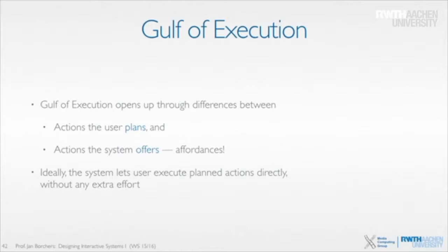The gulf of execution opens up because there might be differences between the actions I plan and the actions that the system offers. We're back to affordances — I might say I know I want to do this, but I don't know how to do it here because I'm not seeing the operations in the interface. An ideal system lets me execute my planned actions directly without having to think about it — I just see exactly how things work and it matches my plan precisely.